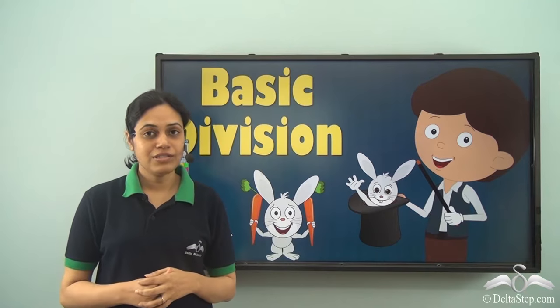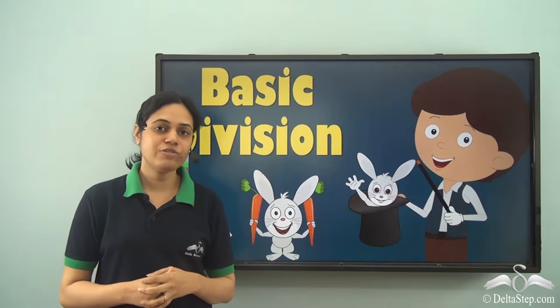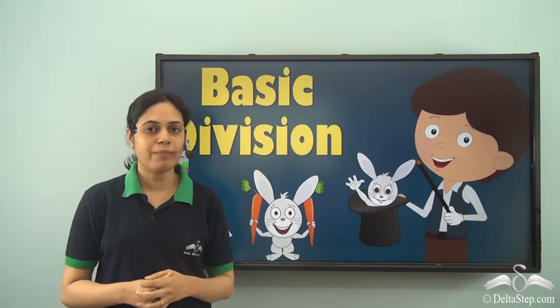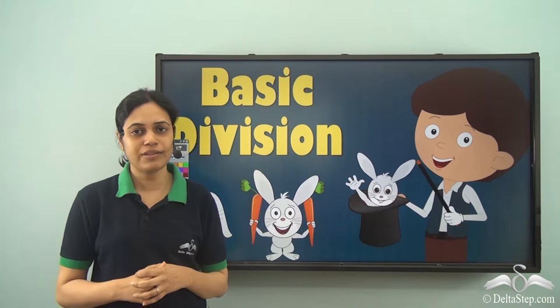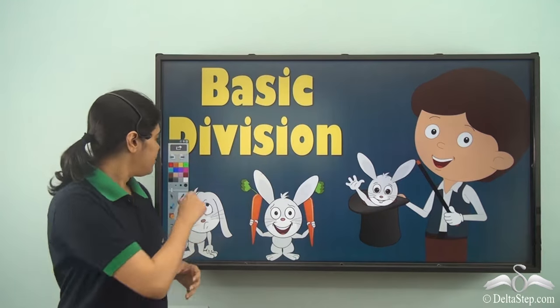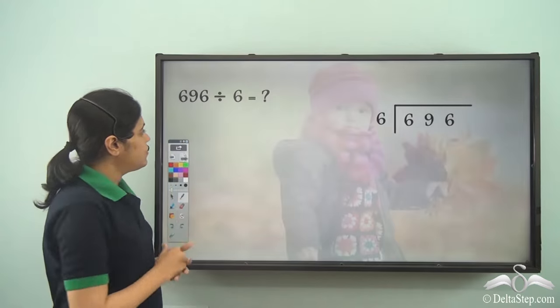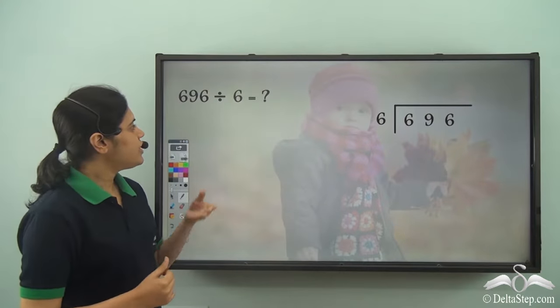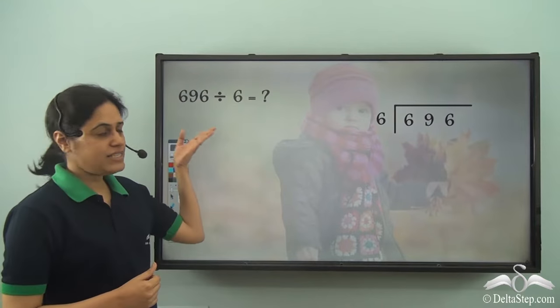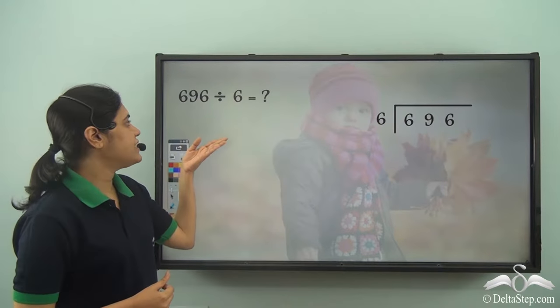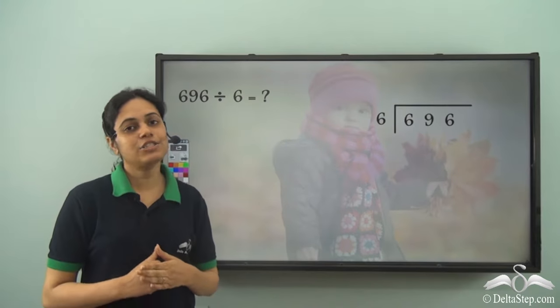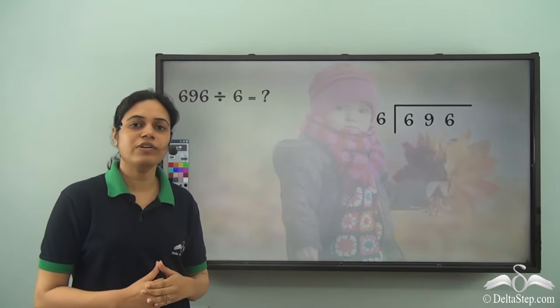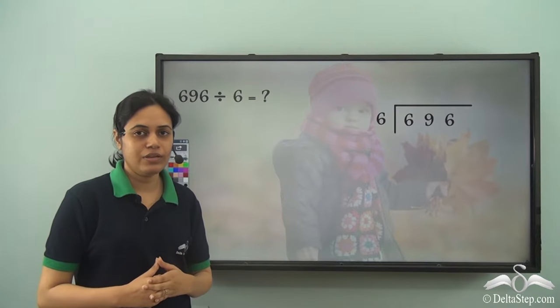You have learnt how to divide two numbers using the long division method. So let us divide 696 by 6 using the long division method.